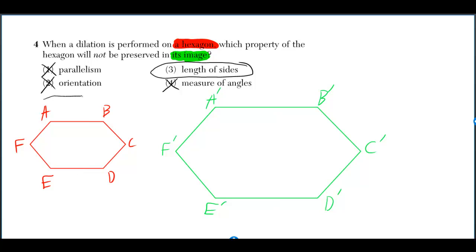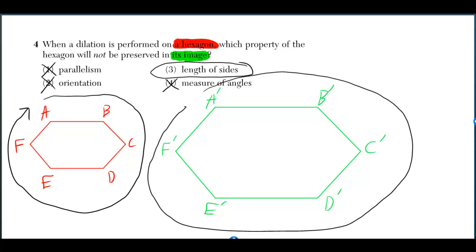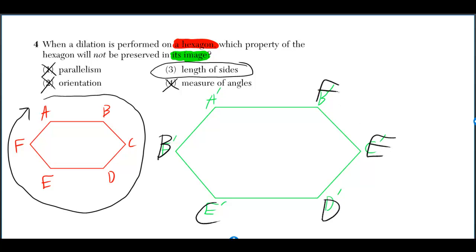Orientation gets preserved. If I can read ABC clockwise in the original figure and the new ABC clockwise in the image, then we say orientation is preserved. It wouldn't have been preserved if it was ABCDEF going counterclockwise.